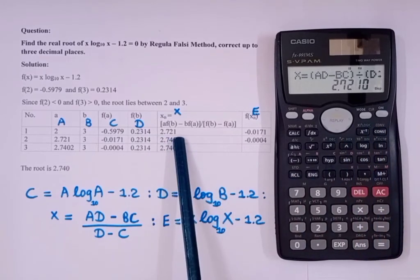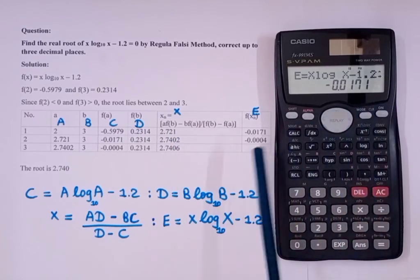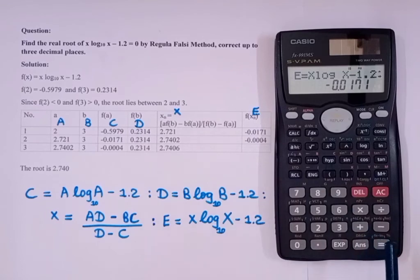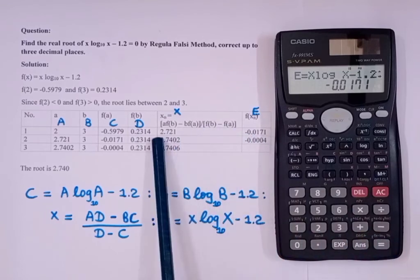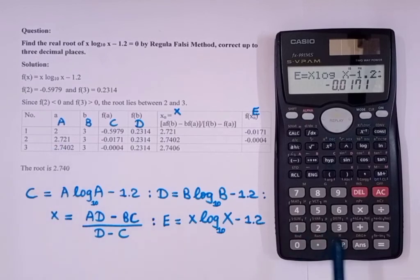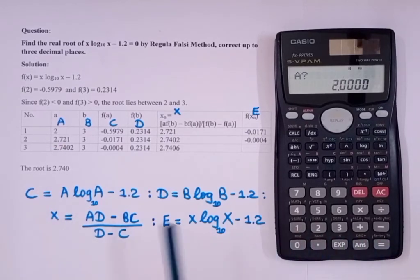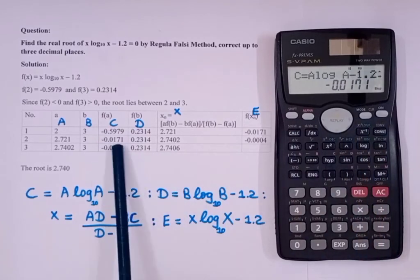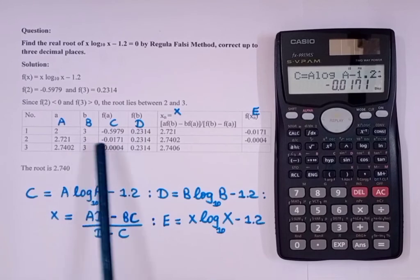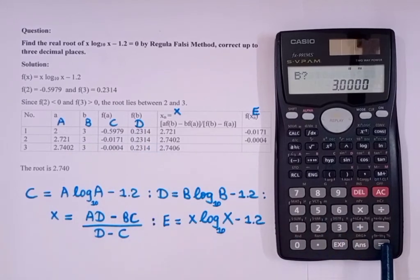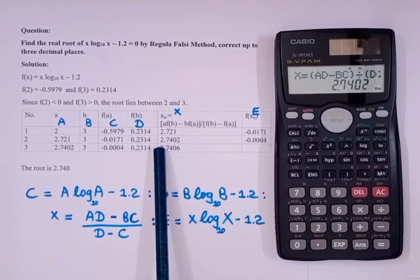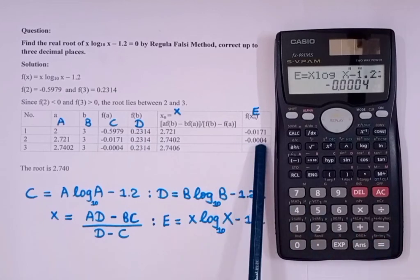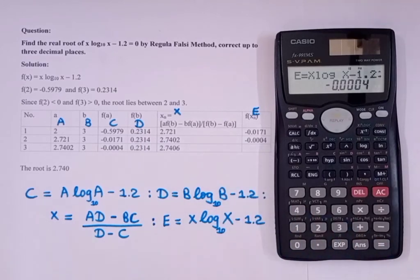And then again press equal. So we get this as minus 0.0171. And as we got this negative, our xn value will be written in place of a. I am just showing the second step. I will input this 2.721. Now my f(a) is coming as minus 0.0171, and b is same, so we will not change that: 0.2314. And then we got this xn, which is 2.7402. And this is coming negative. So this is how you can create the programming in the calculator.